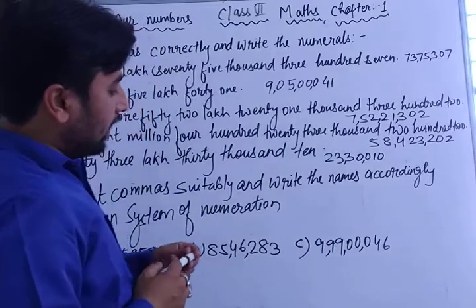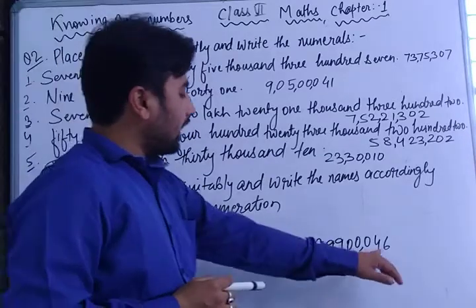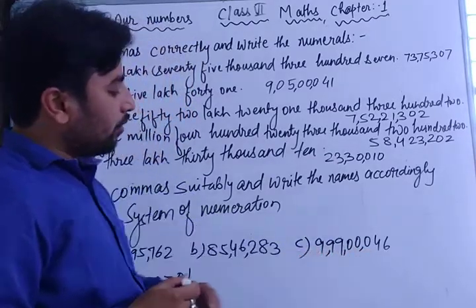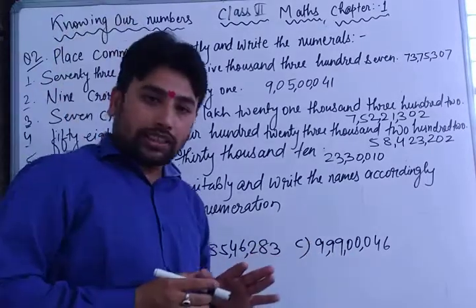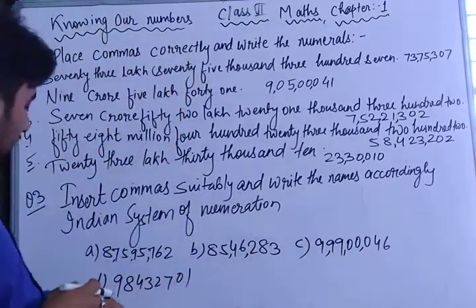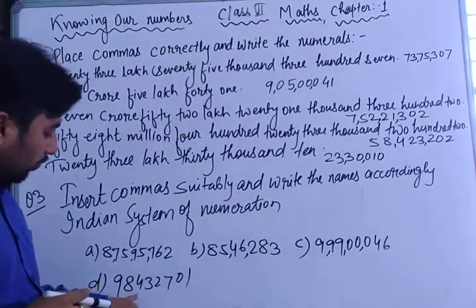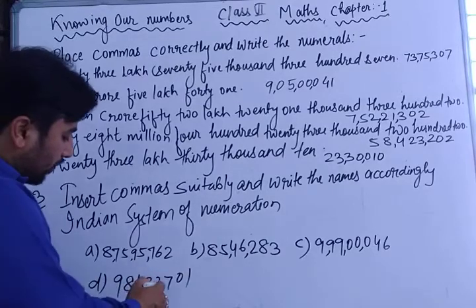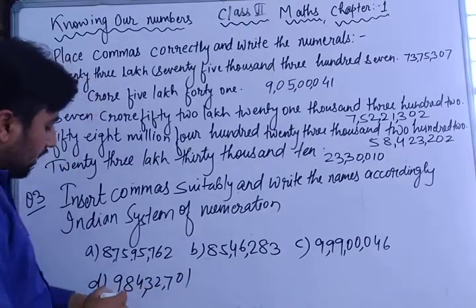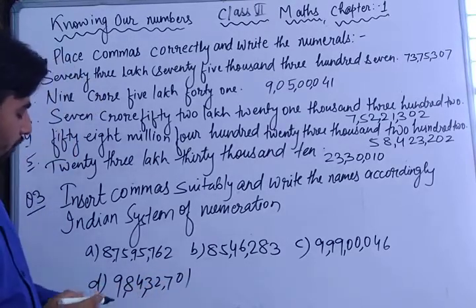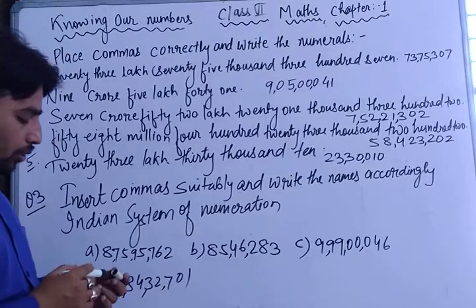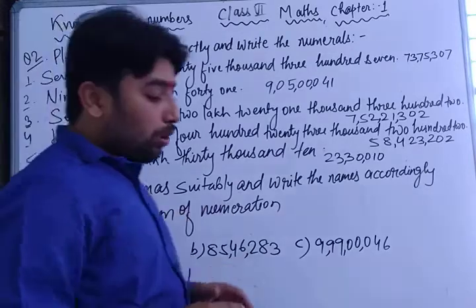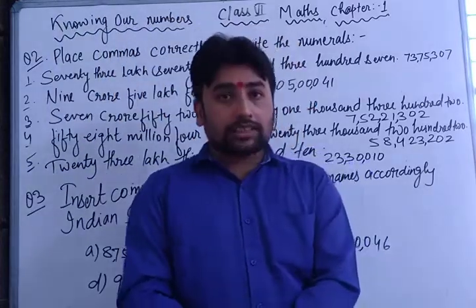The third number — after three digits, then two digits — gives nine crore ninety-nine lakh forty-six thousand... The last number is 984643270 1: after three digits, two digits, two digits — nine crore eighty-four lakh thirty-two thousand seven hundred and one.